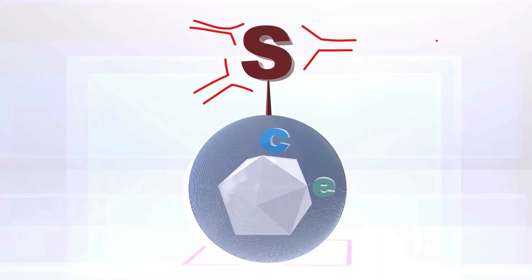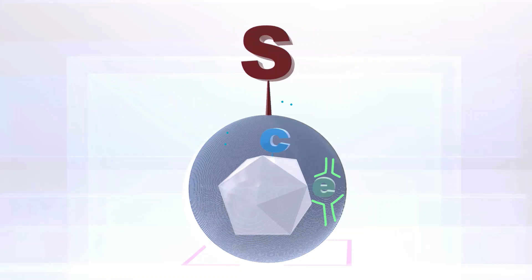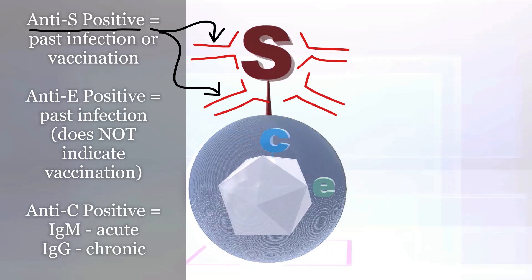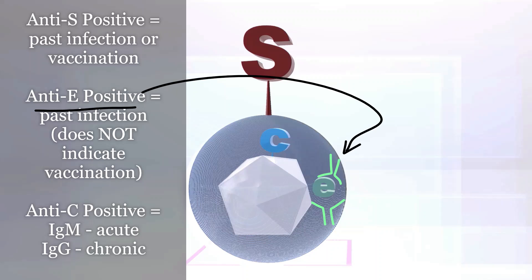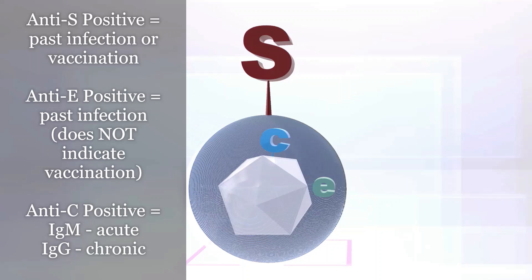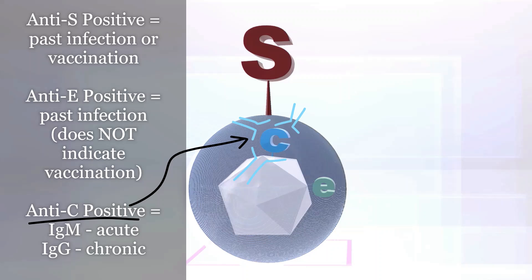Each of the three antigens is associated with different antibodies: the s antigen has s antibodies, the e antigen has e antibodies, and the c antigen has c antibodies. When a person is s antibody positive, their immune system is responding to the s antigen — either from active infection or from vaccination. If a person has e antibodies and the e antigen is gone, that means their immune system mounted a good response. E antibody positive does not indicate vaccination, as vaccination is only relevant to the surface antigen.